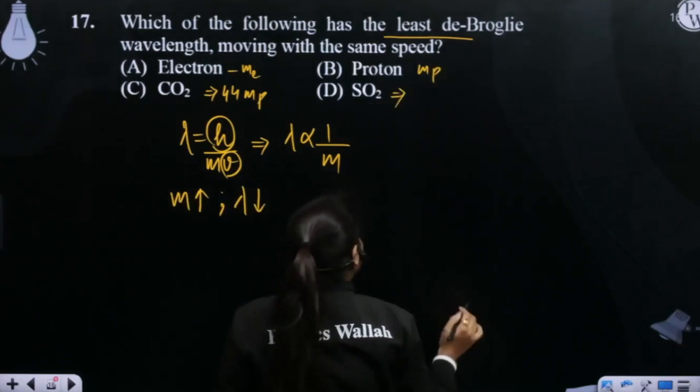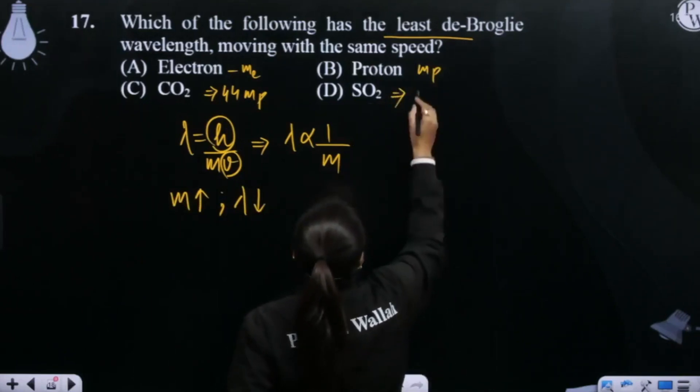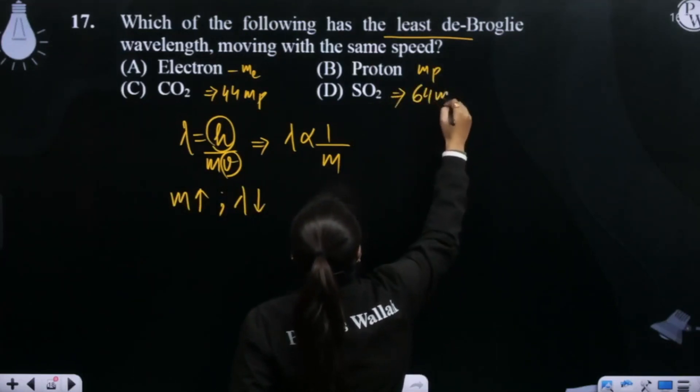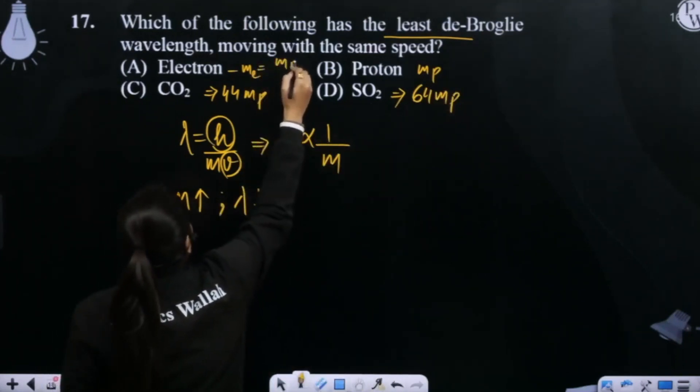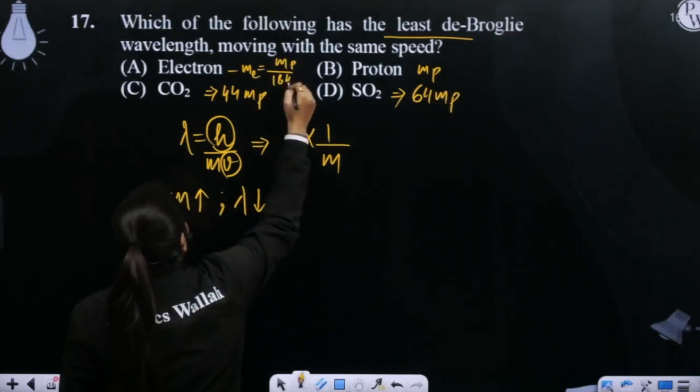SO2's mass, how much is it? 64. So 64 times the mass of the proton. And the mass of the electron is mass of the proton upon 1,840 times. Now we can see.